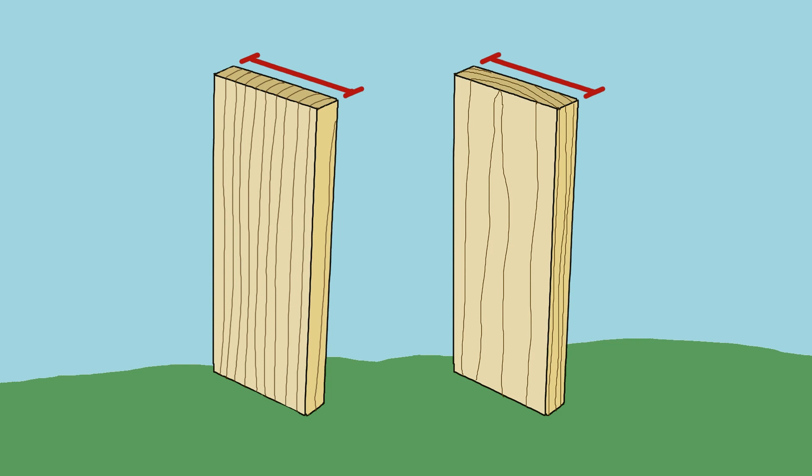The wider dimension of a board, which is perpendicular to its length, is its width. The narrower dimension is its thickness.